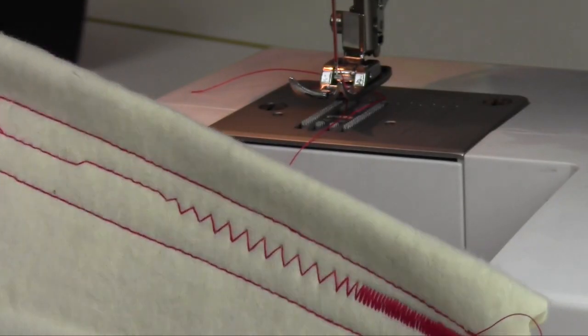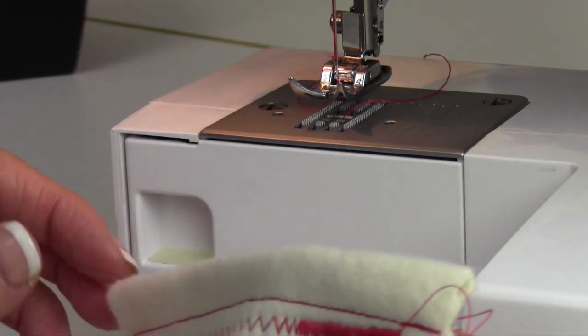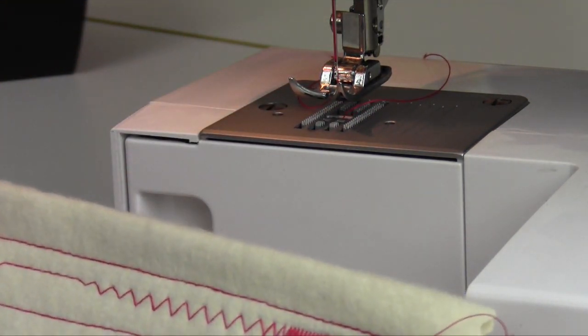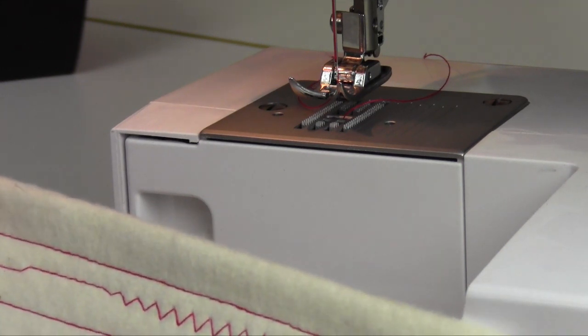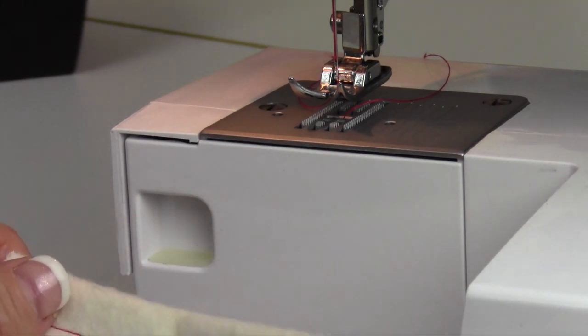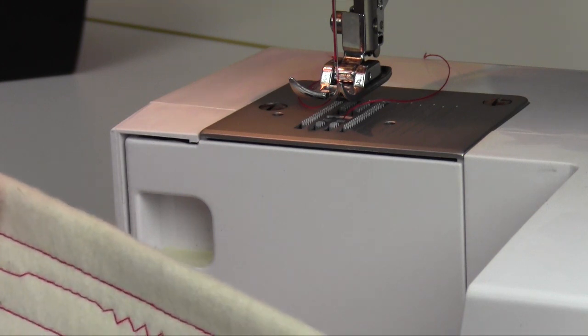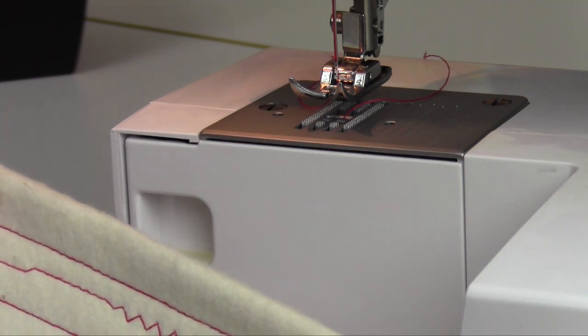You want to make sure you clean and oil your machine after every two to three bobbins to really keep this in top running condition. Then, once a year, have your local Bernina dealer go through and clean everything else. There's a lot of moving parts that are in this machine, so you want to make sure that they stay nice and lubricated for many years to come.